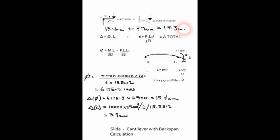Now look at 19.3 and the pure cantilever deflection. Just as an illustration, the total deflection is approximately five times the pure cantilever deflection, which shows us the influence of the backspan.